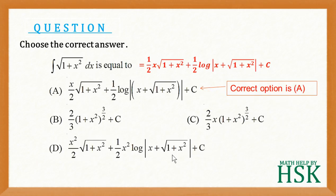You can check that all the three options do not match my calculated value. So the correct option is A.